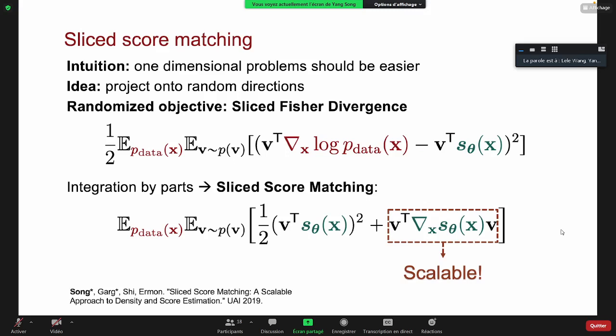Yeah, so if the projection distribution has certain properties, then this is guaranteed to be true. So essentially we just want the projection direction to cover all directions, all angular directions in the space. If it can cover all directions, then of course if those two vector fields do not match each other, then there exists a certain direction such that the projection does not match each other. So in those cases, minimizing the difference between projected vector fields is equivalent to minimizing the original difference between the high dimensional vector fields.